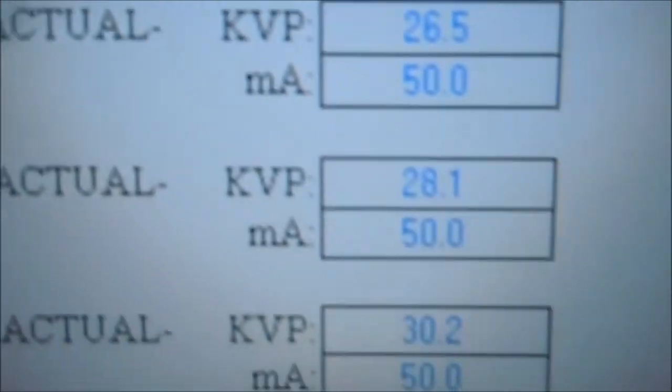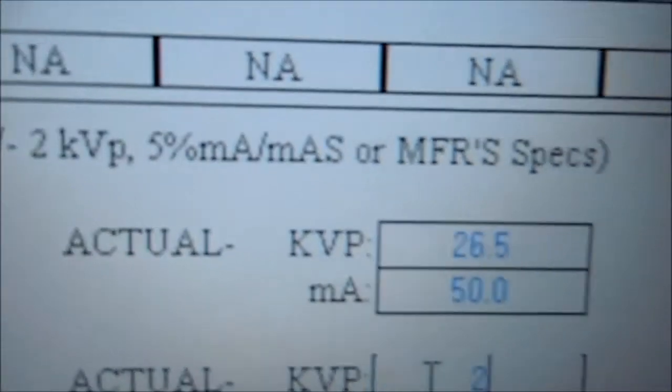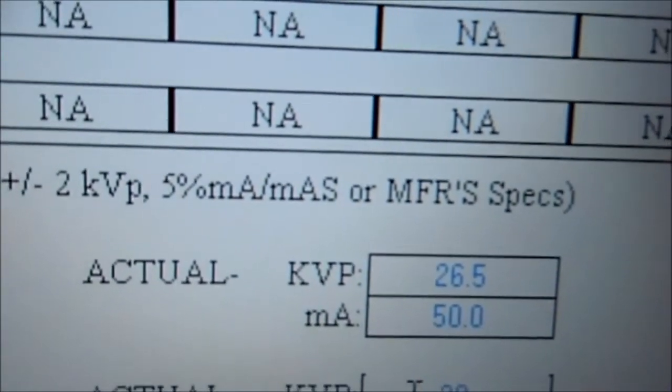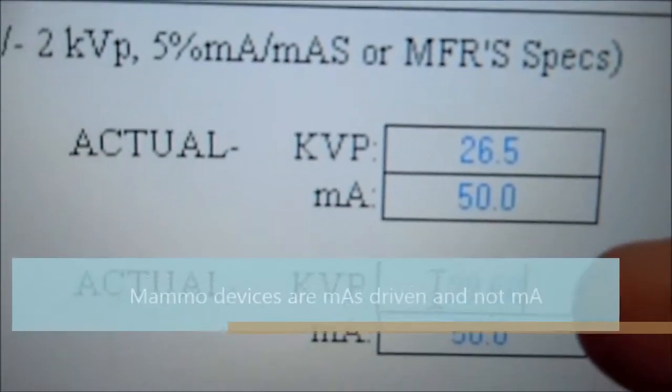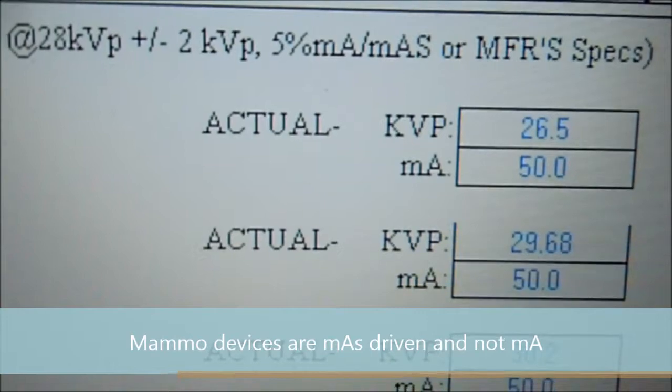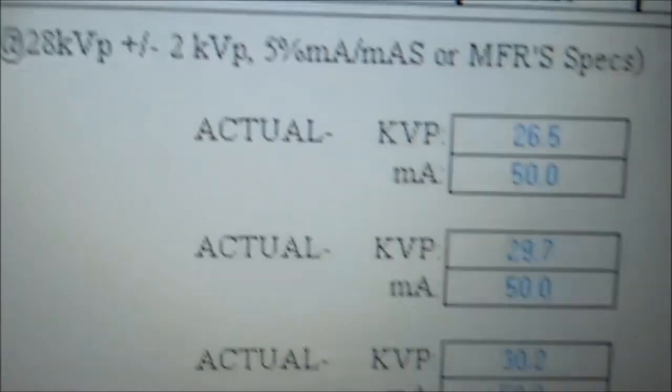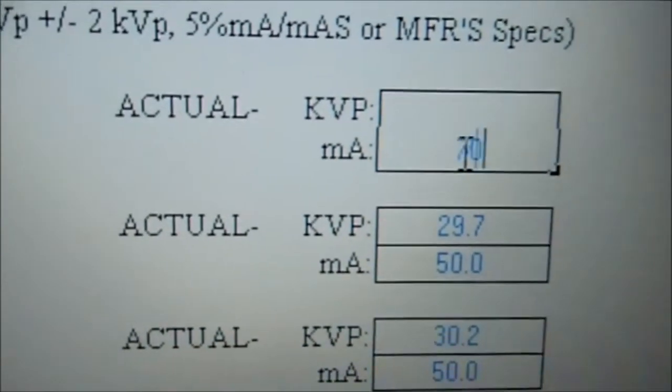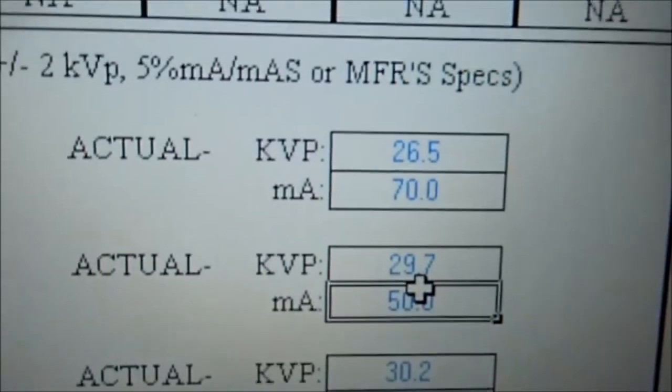Which we will log here. 28. We'll put here 29.68. And we can adjust the MA to 70, which is what we're actually taking it at.